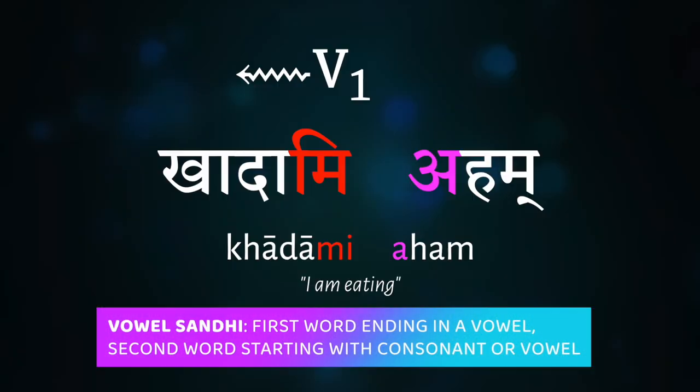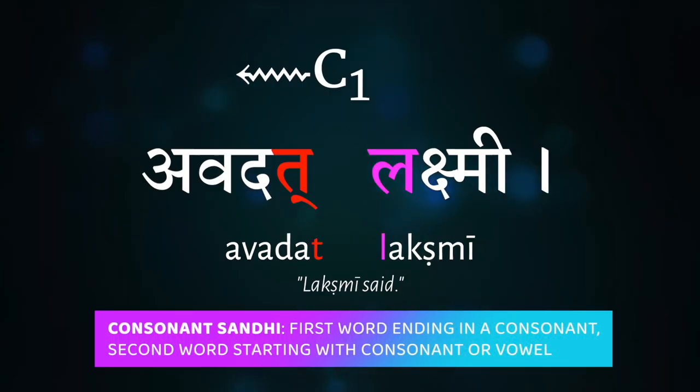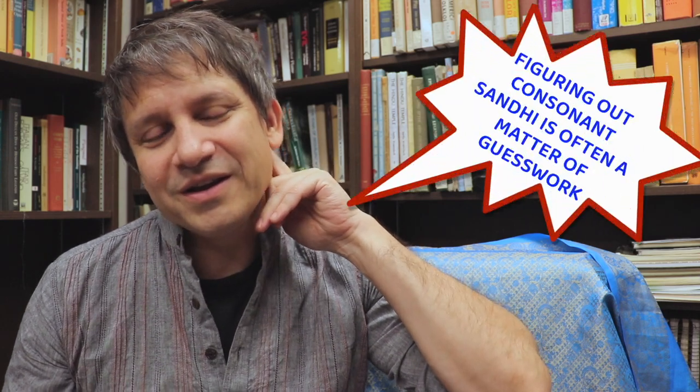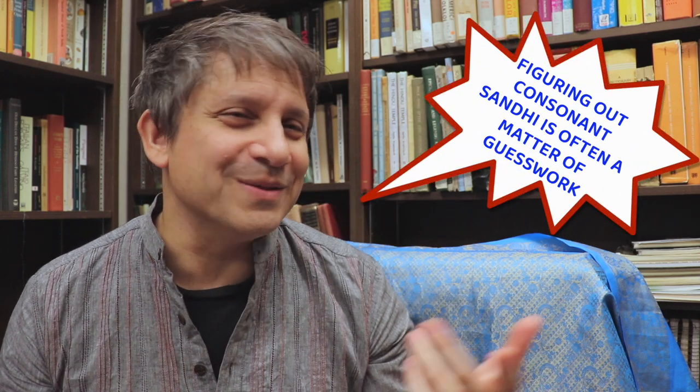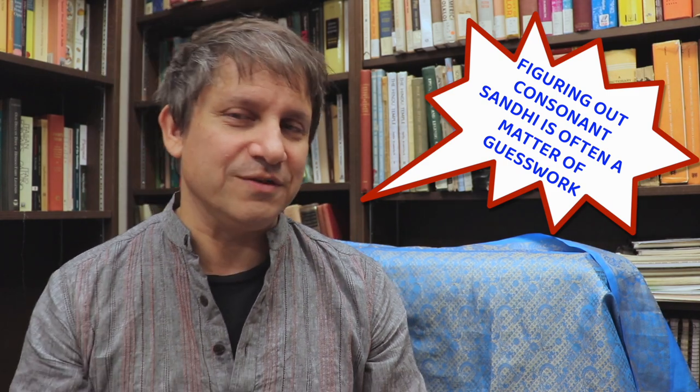Namo namaha and welcome back. Now that we've learned the basics of vowel sandhi — when the first word ends in a vowel V1 — let's turn to consonant sandhi, which takes place when the first word ends with a consonant C1. There are little twists here and there, but for the most part the vast majority of consonant sandhi is relatively straightforward, maybe even a little easier than some of our tricky vowel sandhis.